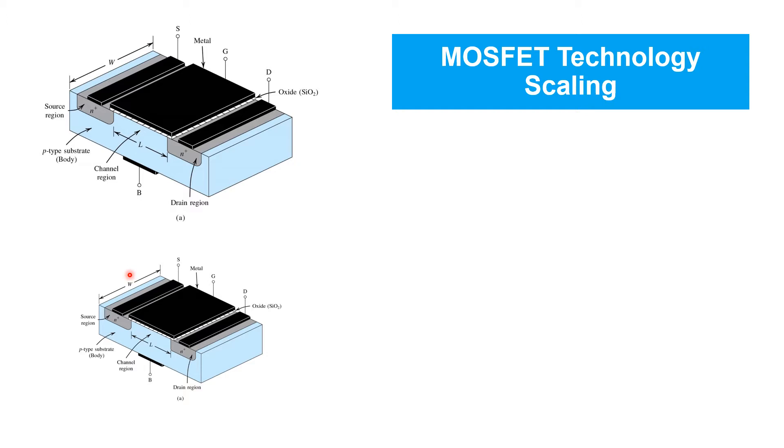So much so that the industry has pursued manufacturing technologies diligently that allow us to make MOSFETs with smaller and smaller channel lengths. This process of taking a manufacturing technology and improving it so that it can be used to manufacture transistors with a smaller minimum gate length is called MOSFET technology scaling, and it's proceeded over the past decades at an amazing rate.